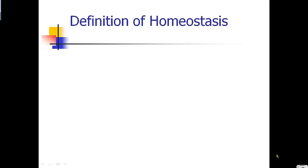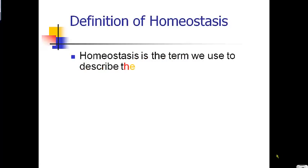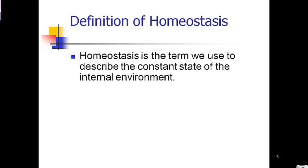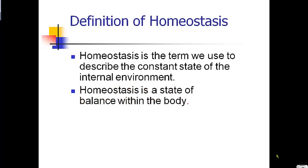Today we're going to talk about homeostasis and what homeostasis means. To break down the word, the prefix 'homeo' means the same, and 'stasis' means status. So homeostasis is where your body is trying to keep the same status — basically trying to keep balance. Homeostasis is a term we use to describe a constant state of the internal environment, a state of balance within the body.